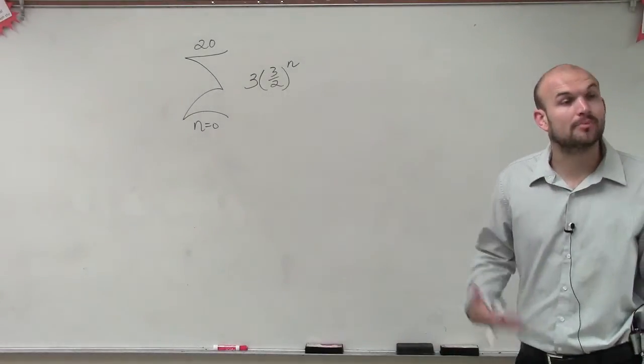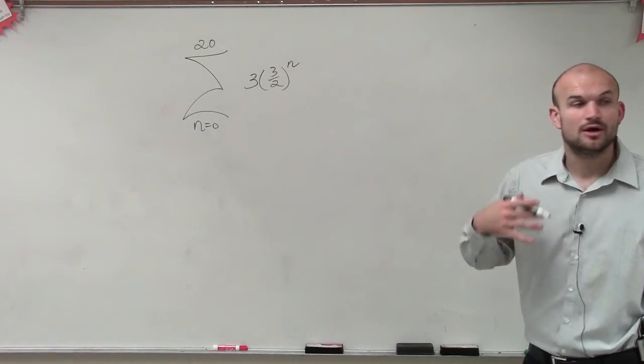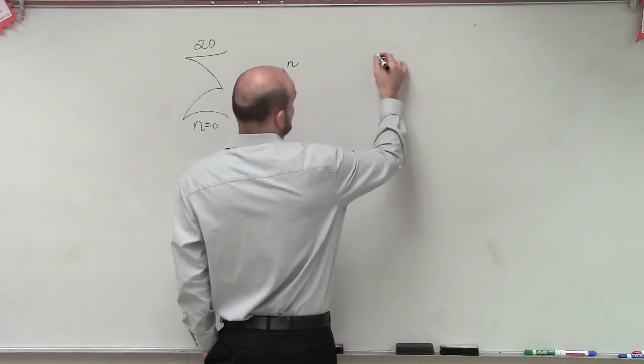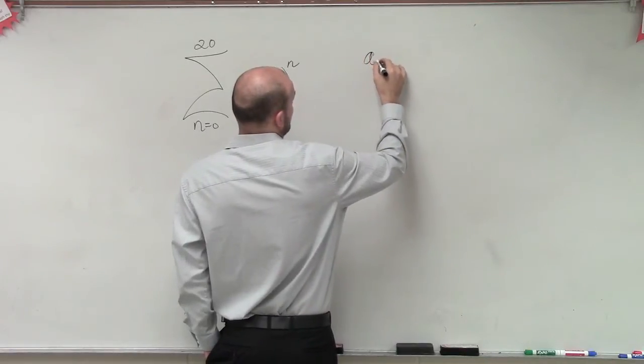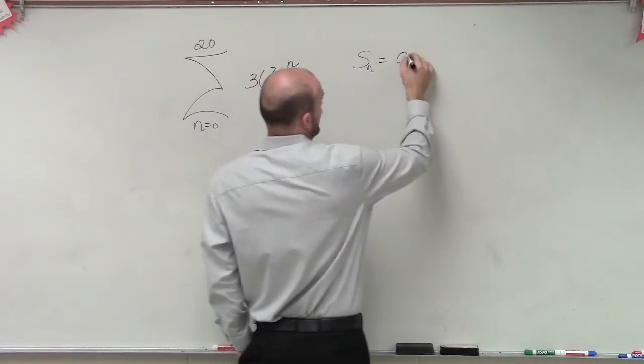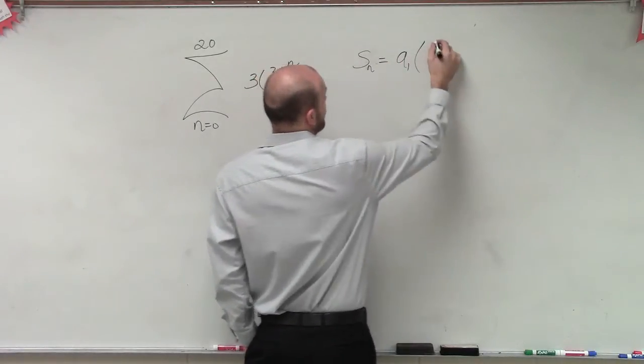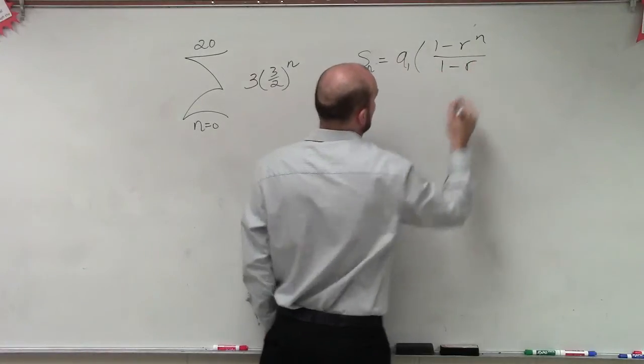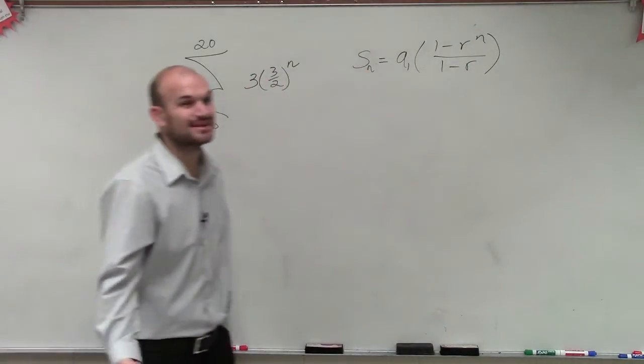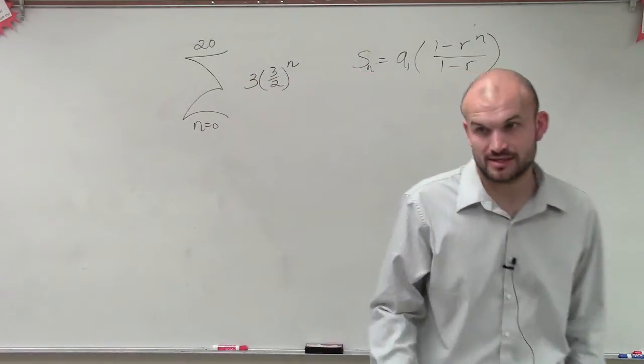When we're trying to find the sum or the partial sum of a finite series, we have to make sure there's a couple things. One thing I said was that the partial sum, s of n, is equal to a sub 1 times 1 minus r to the n over 1 minus r, right? For a geometric series, that's what I said the partial sum was. Do you guys remember? You wrote that down? OK.